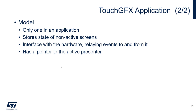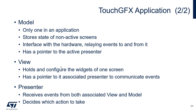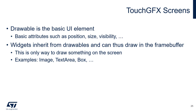The view holds and configures the widgets of one screen (the active one) and has a pointer to its associated presenter to relay events that happen on the screen. The presenter receives events from both model and view and decides which action to take. Regarding terminology: a Drawable is the basic UI element — it has basic attributes such as position, size, and visibility. Widgets inherit from this Drawable class and can be drawn in the frame buffer. Being a drawable is the only way to be drawn on screen — for example, an image, a text area, and a box are all drawables.